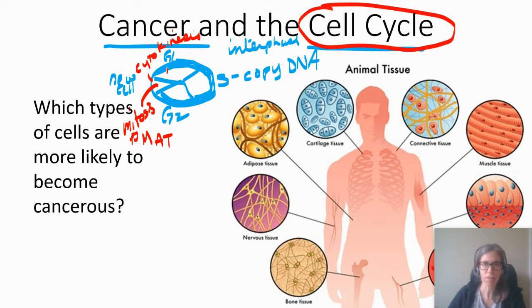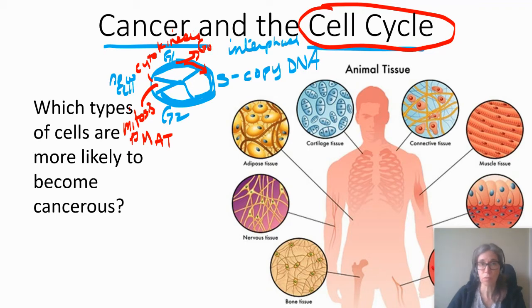How does the cell know when it's ready to go from the G1 phase to the S phase? Has it grown enough? Are there any errors in the DNA? Is it ready to go on, or should it stay in G1? Or perhaps it should leave the cell cycle to G0, where it's just doing life stuff but not going to reproduce. There are chemical signals that tell the cell whether it's ready to do synthesis or not.